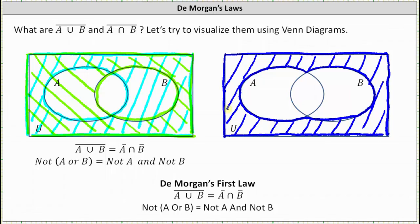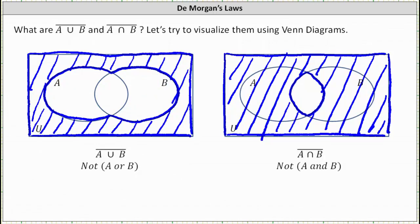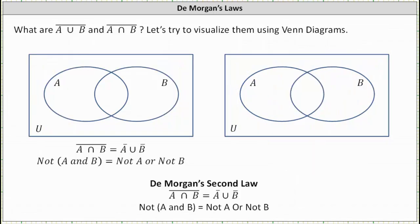And this is DeMorgan's first law. DeMorgan's first law states the complement of the union of A and B is equal to A complement intersect B complement. Now we want to determine a second way to express the complement of the intersection of A and B, and once again, this can be done. The complement of the intersection of A and B is equal to A complement union B complement. Or we can say not (A and B) is equal to not A or not B.